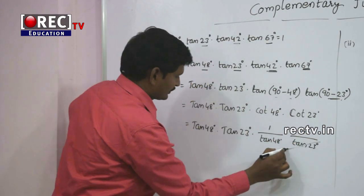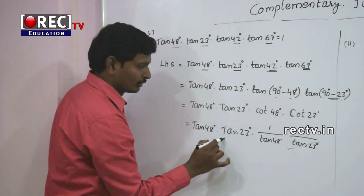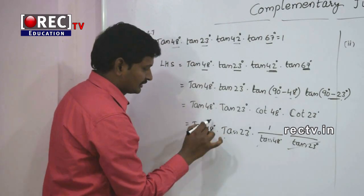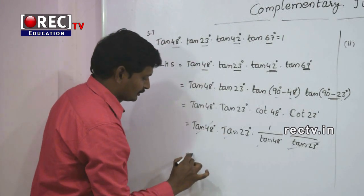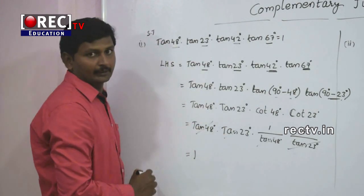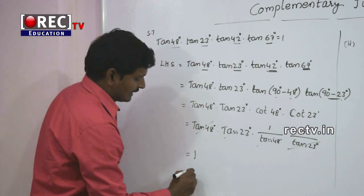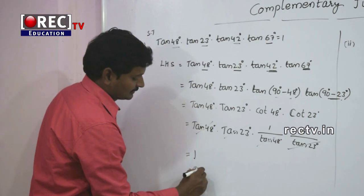tan48° and 1/tan48° cancel, and tan23° and 1/tan23° cancel, giving a value of 1, which equals RHS.